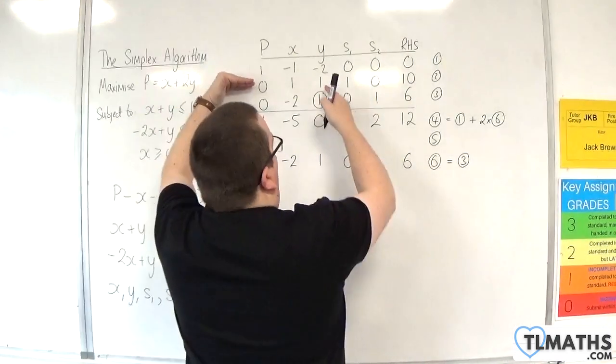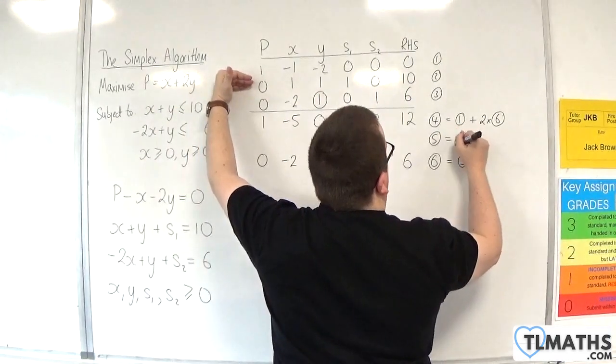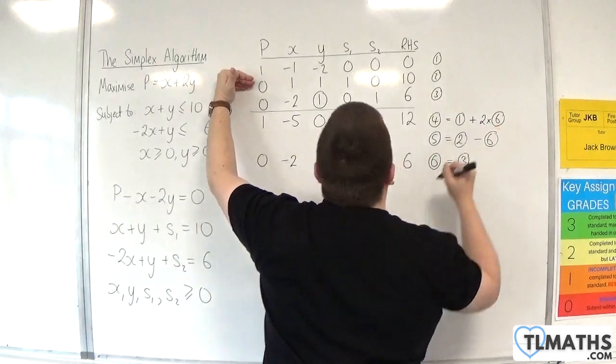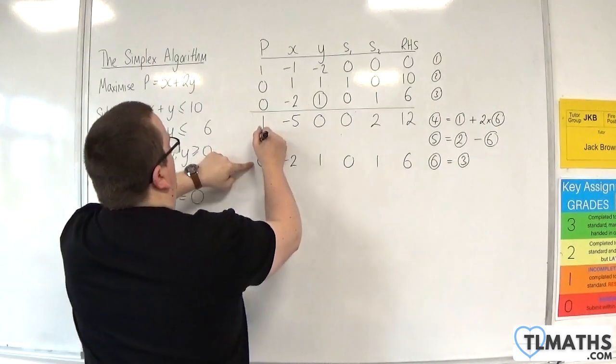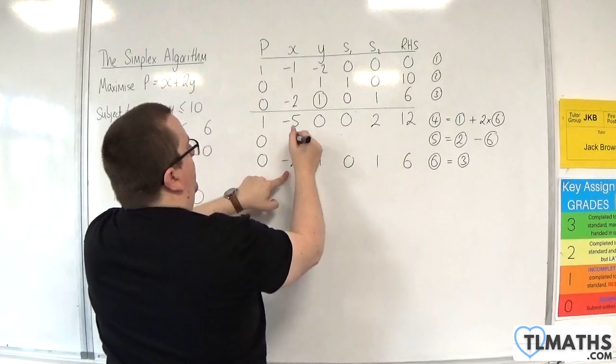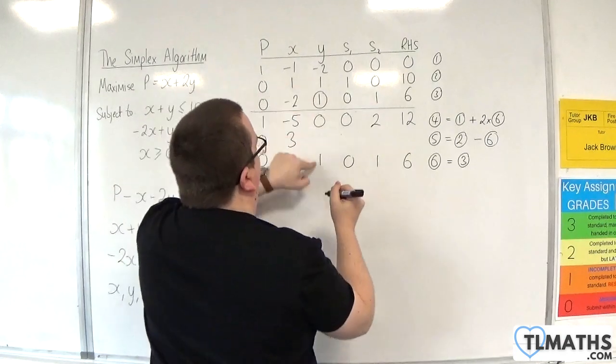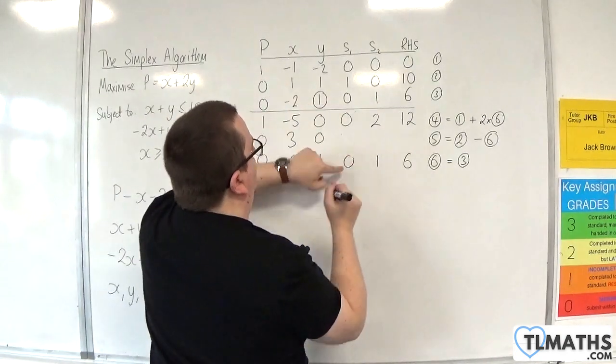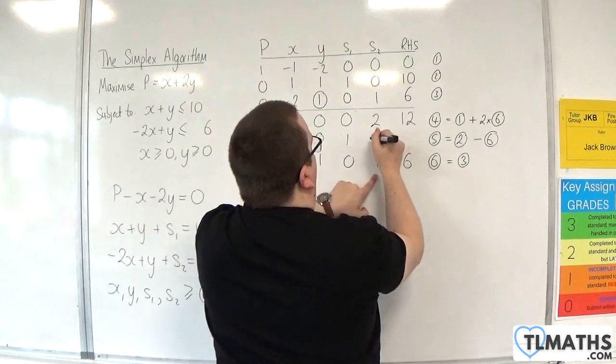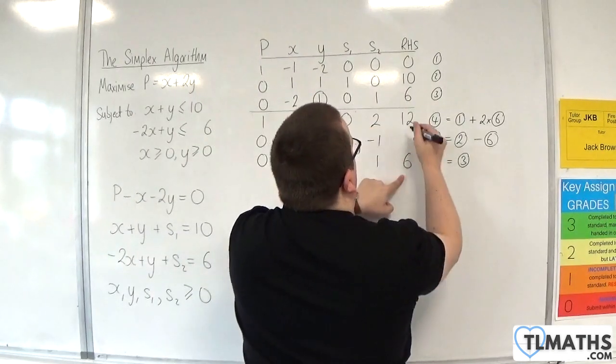Then I need to subtract that one. So I'm going to have row 2 take away row 6. So 0 take away 0. 1 take away minus 2 is 3. 1 take away 1 is 0. 1 take away 0 is 1. 0 take away 1 is minus 1. 10 take away 6 is 4.